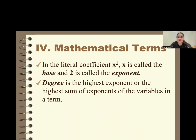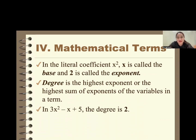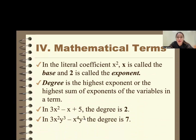We are also going to review the concept of degree. We have a base and an exponent, as in x squared. The degree is the highest — or the sum — of the exponents of the variable in each term. For example, in 3x squared minus x plus 5, the degree is 2. In another expression like 3x squared y cubed minus x to the 4th y cubed, the highest degree is 7, since you add the exponent of x, which is 4, and the exponent of y, which is 3, for a total of 7.